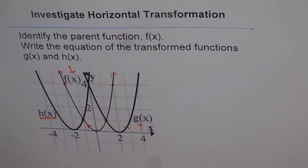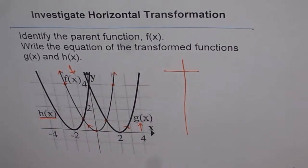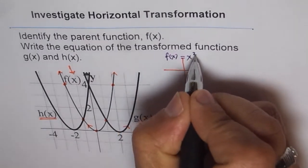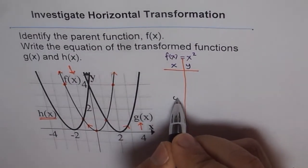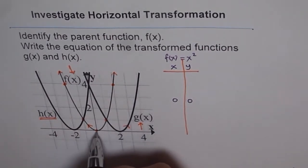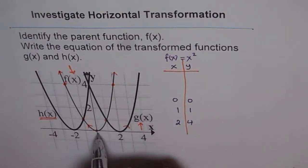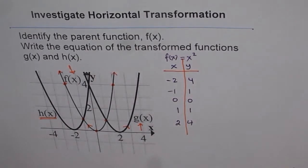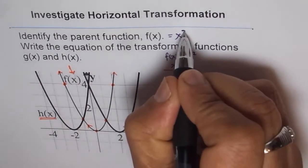Whenever the parent function is x squared, consider these five points. Let's make a table of values. For f(x) = x², the critical points are: starting at the center (0, 0), then moving right we get (1, 1) and (2, 4), and moving left we get (−1, 1) and (−2, 4). These five are the critical points on the parent function f(x) = x², which is our answer for the first question.